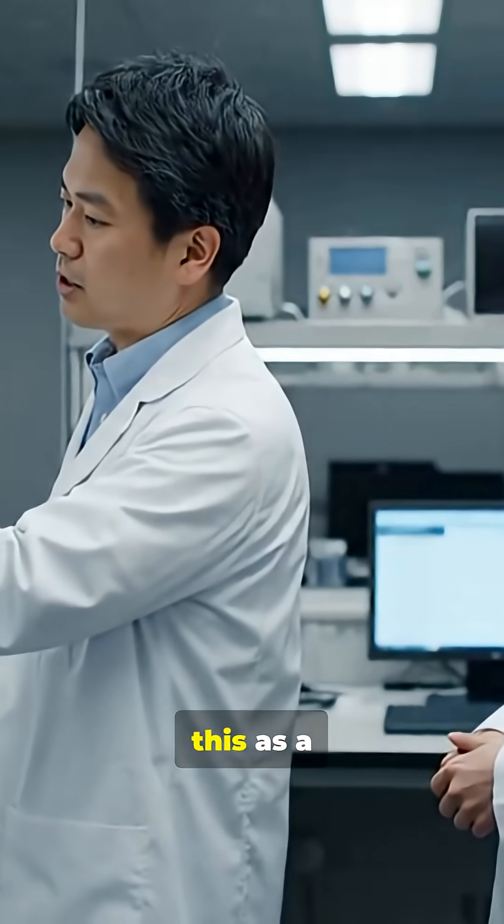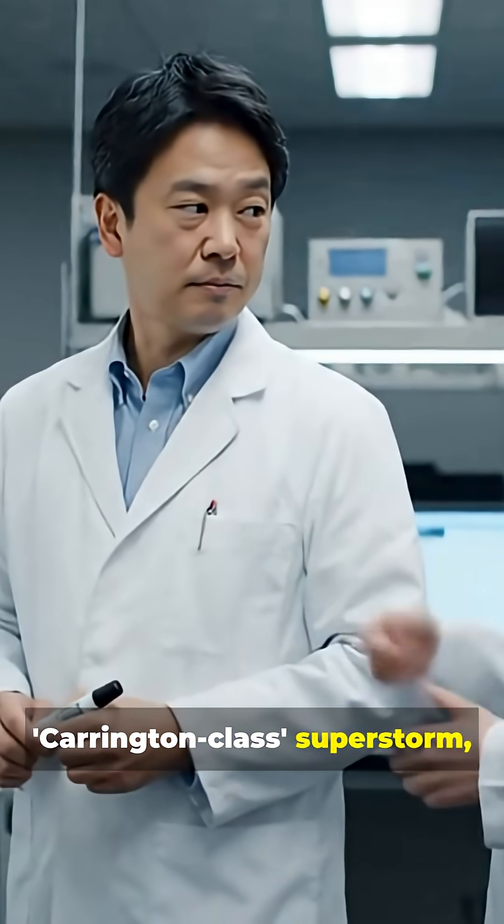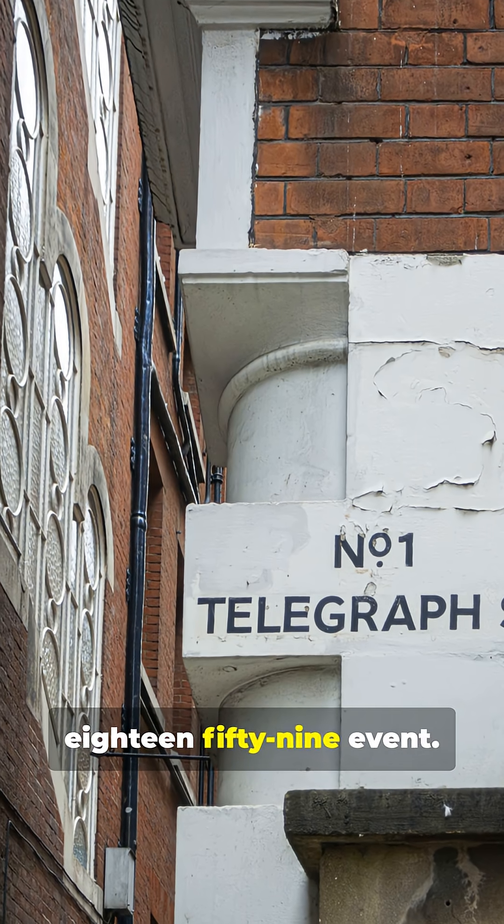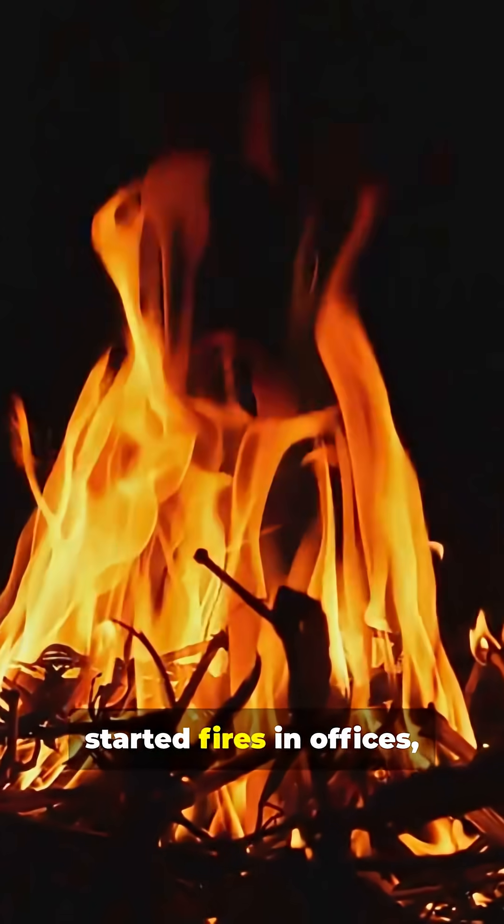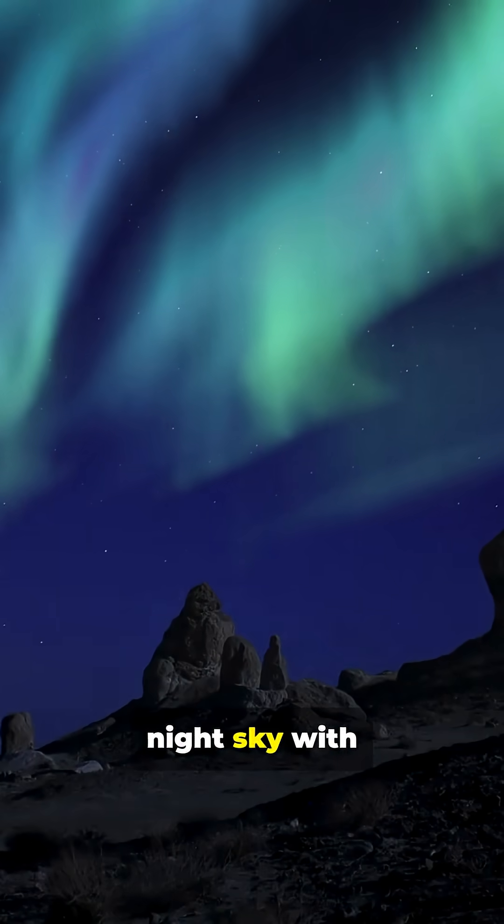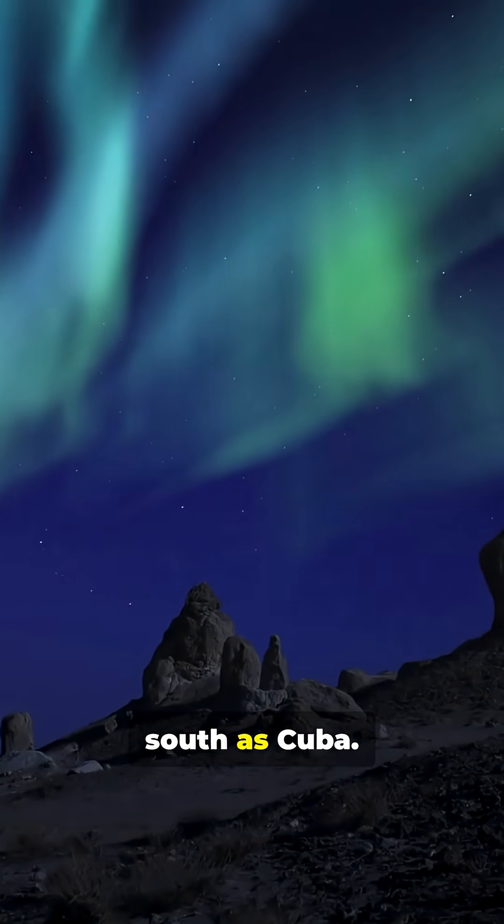Scientists classify this as a Carrington-class superstorm, putting it on par with the legendary 1859 event. Back then, a similar storm fried telegraph systems, started fires in offices, and lit up the night sky with auroras seen as far south as Cuba.